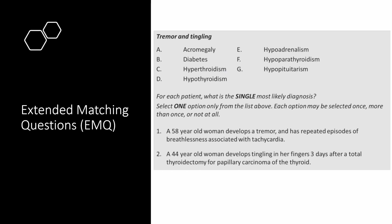An example of a two step answer is the second question: a 44 year old woman develops tingling after a total thyroidectomy. First thing you want to know is that a thyroidectomy can actually carry a risk of removing your parathyroid glands. Absent parathyroid glands lead to low calcium, and low calcium leads to tingling in her fingers. So the answer will be F, hypoparathyroidism.